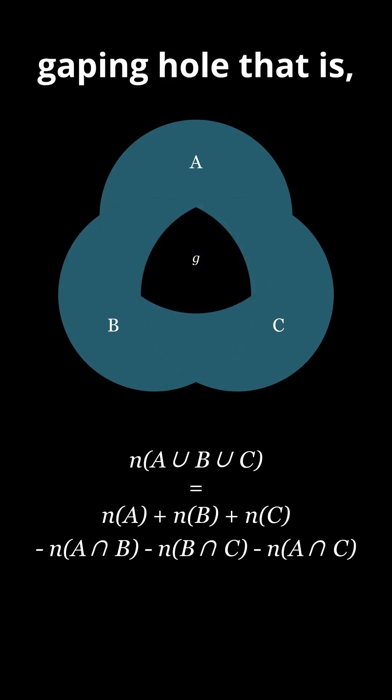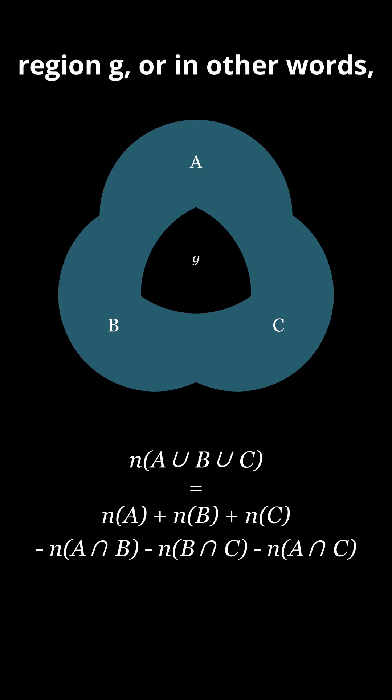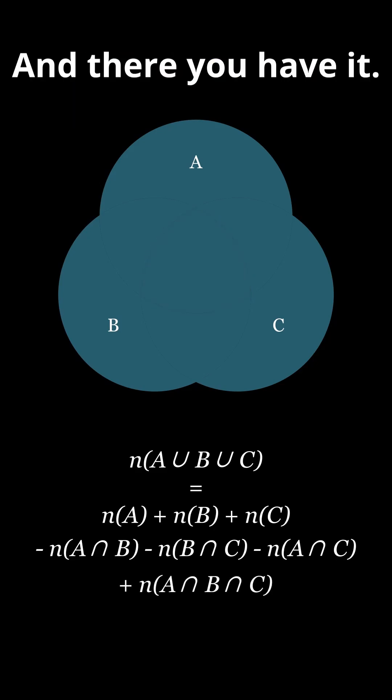And now you can see a gaping hole, that is region G. This is because by subtracting those three regions, we subtracted region G thrice. And now it is counted zero times. The solution is to just add region G, or in other words, A intersection B intersection C back in. And there you have it.